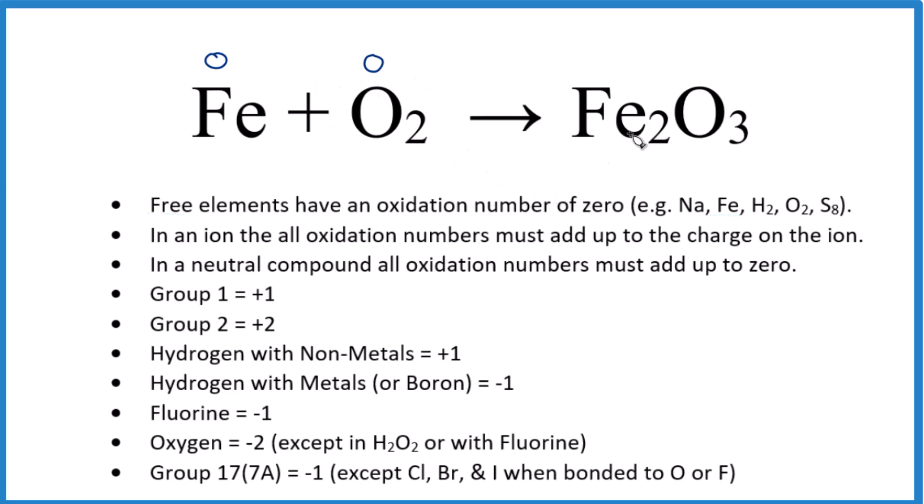So over here, iron in this Fe2O3, iron three oxide, we don't really have a rule for iron down here. So what we're going to do is look at the oxygen, because oxygen is almost always negative two, with a few exceptions. So we have negative two, three times negative two, that's going to be negative six here. So we need a positive six over here. So if the iron was plus three, two times plus three, that would give us the positive six. So these are our oxidation numbers here for the Fe2O3.